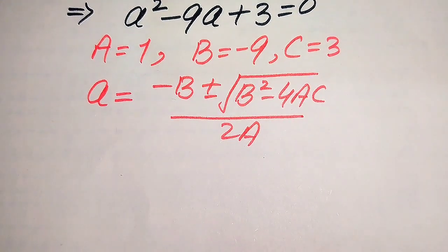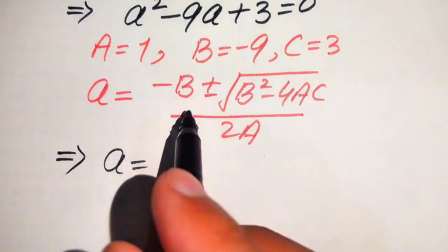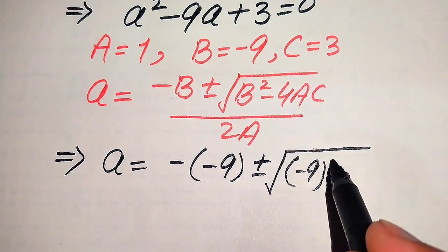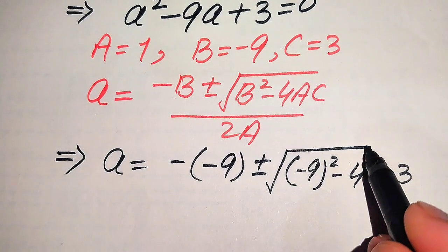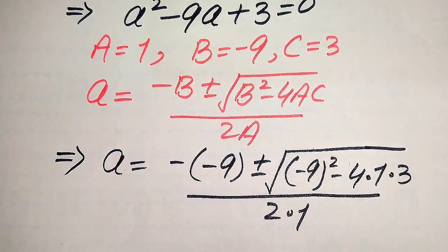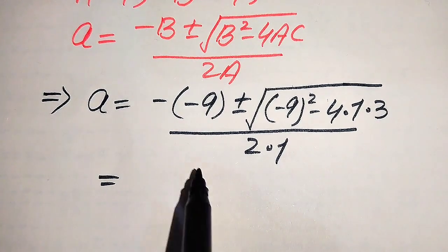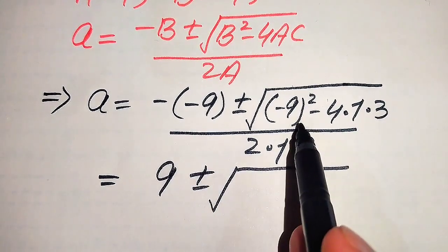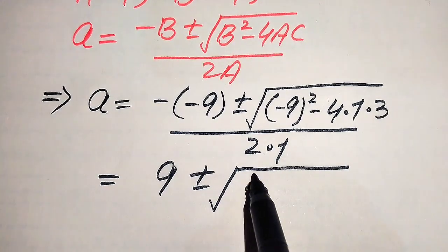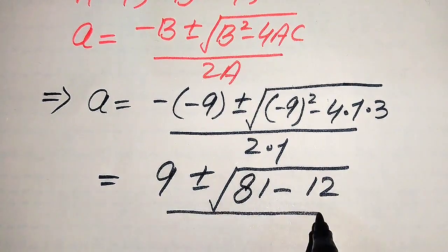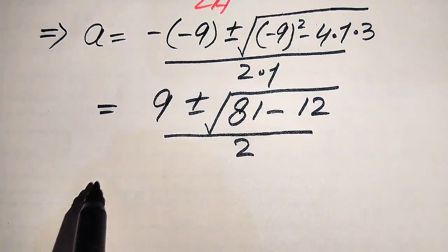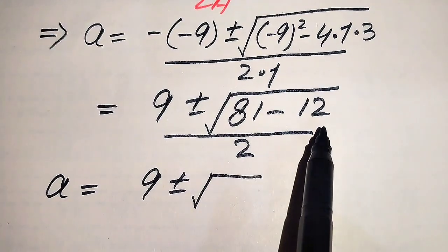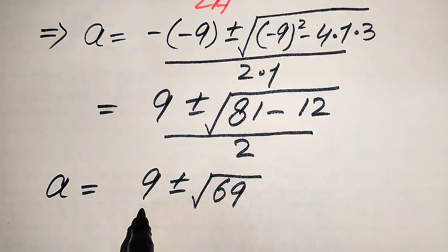Substituting: x equals minus(minus 9) plus or minus square root of (minus 9) squared minus 4 times 1 times 3, divided by 2 times 1. Simplifying: 9 plus or minus square root of 81 minus 12, divided by 2. That gives 9 plus or minus square root of 69, divided by 2.